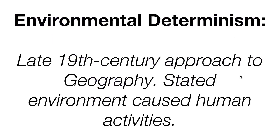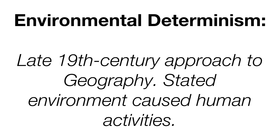Environmental determinism is the late 19th century approach to geography. It states that the environment causes human activities, and that the answers to questions of human geography could always be found in physical sciences. It also argues that the physical environment is directly related to the sociocultural development of a place. For example, people that live in a desert are often limited by the desert in any human activity they pursue.